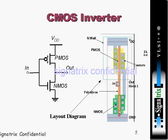From here you apply the input. This is the drain of the PMOS, and they have connected it to the drain of the NMOS using metal. This is the CMOS inverter layout diagram, and this is the schematic diagram.